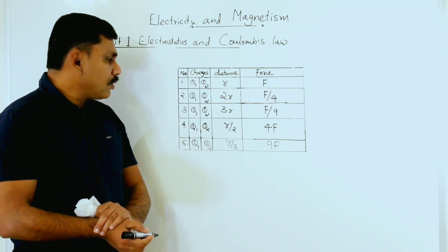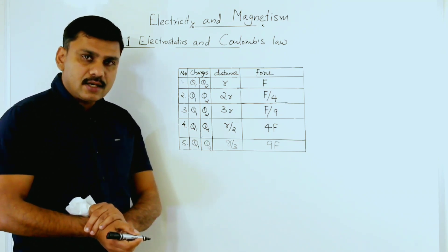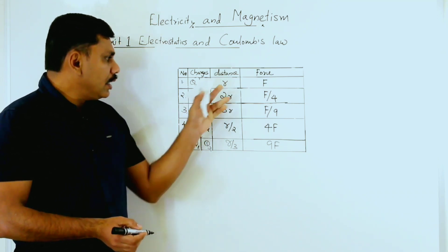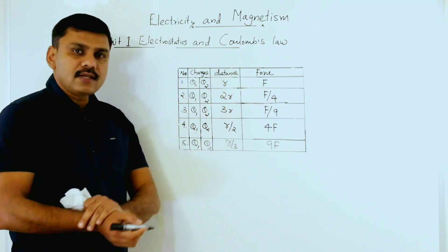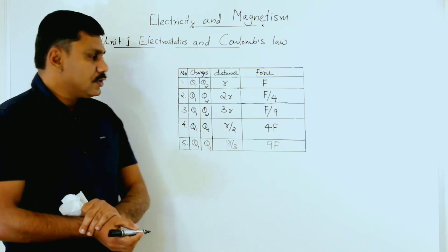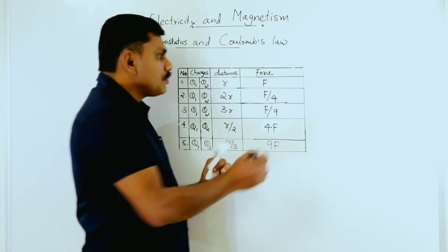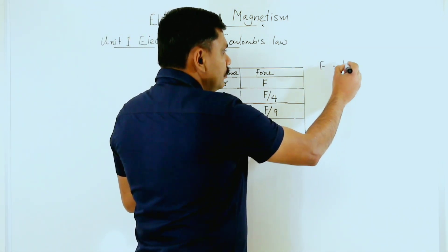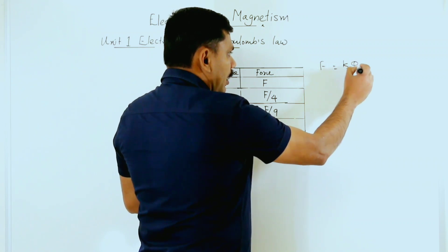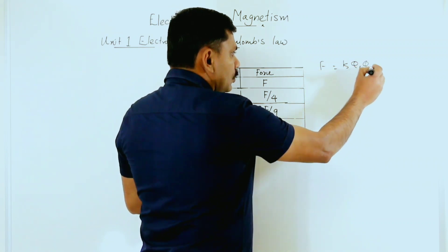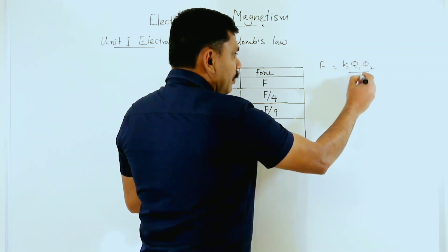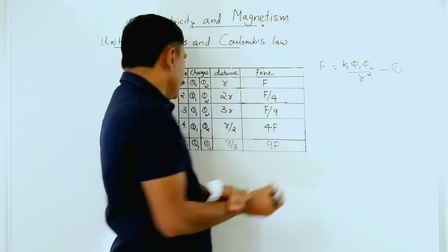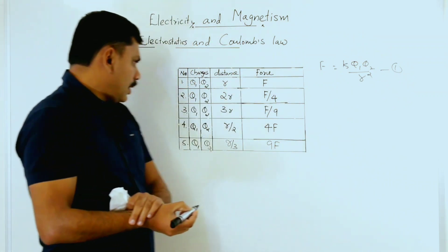The charges are q1 and q2 and the separation is r. So according to Coulomb's law, you can write F = k·q1·q2 divided by r squared. That is equation number one.